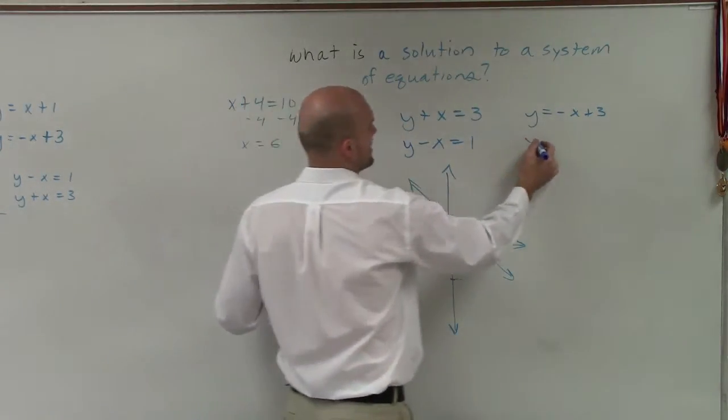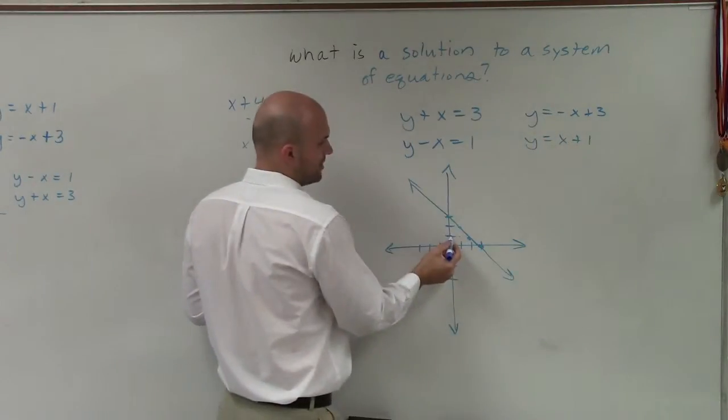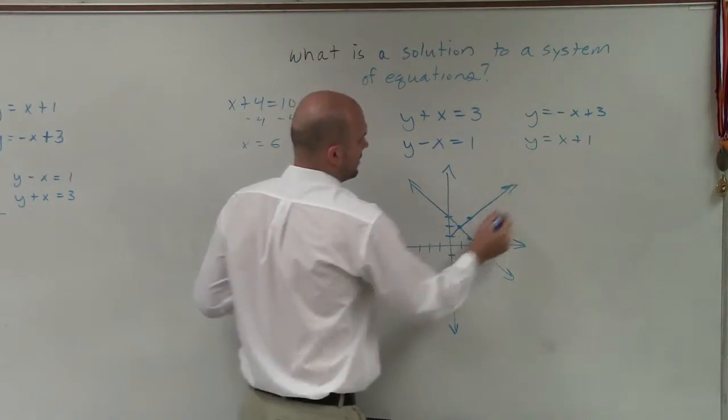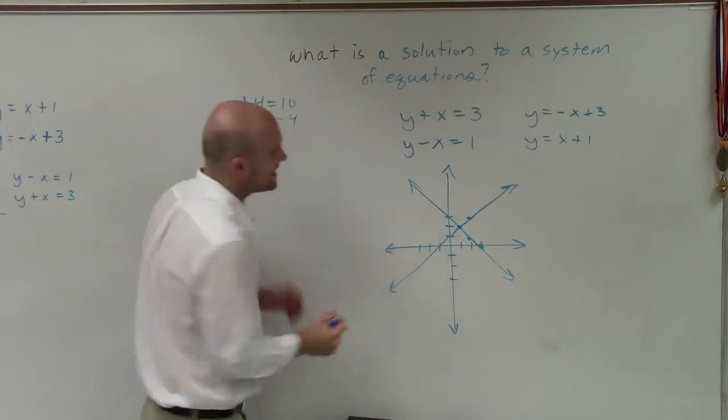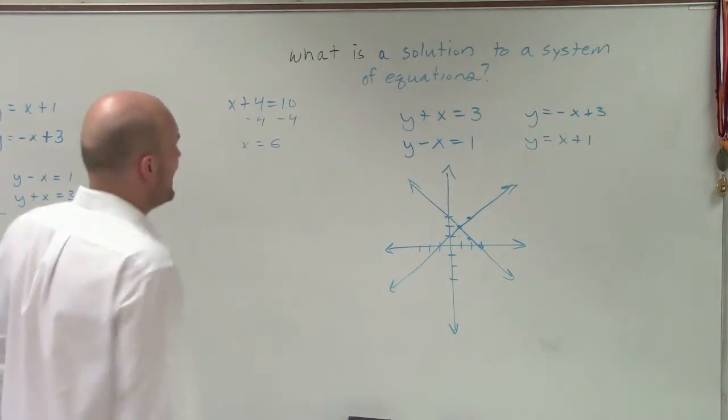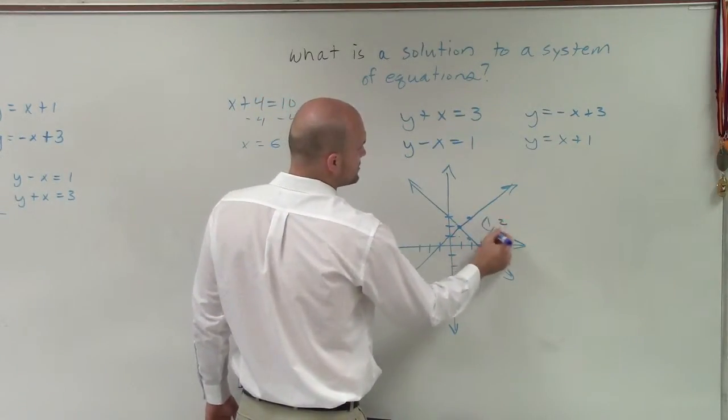And then this one I could rewrite as y equals x plus 1. So I'd go up 1, and I'd go up 1, over 1, up 1, over 1. Now, what you can see is these lines, there's one important point that's very important. And that's going to be their intersection. And that intersection is at 1, comma, 2.